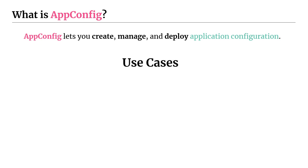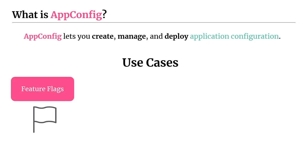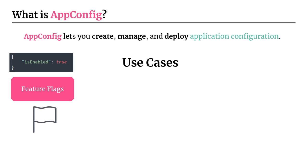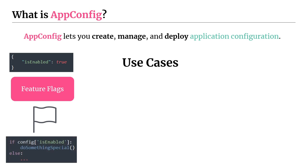The most common use case for AppConfig is feature flags. They're signposts you put into your code that can change the behavior of your application. A simple feature flag might be a JSON file with one entry where the key is 'is_enabled' and the value is true, gating some kind of feature launch. In your app, you retrieve your configuration and use an if statement: if the configuration is enabled, do something special; otherwise, follow the normal flow.